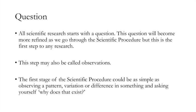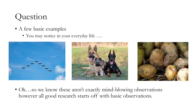All scientific research starts with a question. This question will become more defined as we go through the scientific procedure, but this is the first step to any research — this step may also be called observations. The first stage could be as simple as observing a pattern, variation or difference in something and asking yourself, why does that exist? A few basic examples: birds flying in a V formation overhead; dog breeds that look completely different but are considered the same species; and food left too long in your fridge that's gone mouldy.